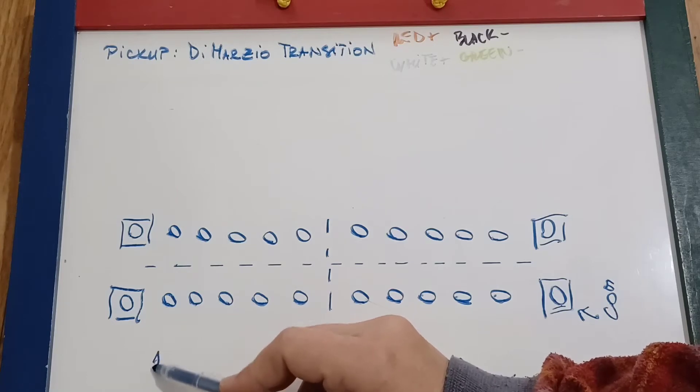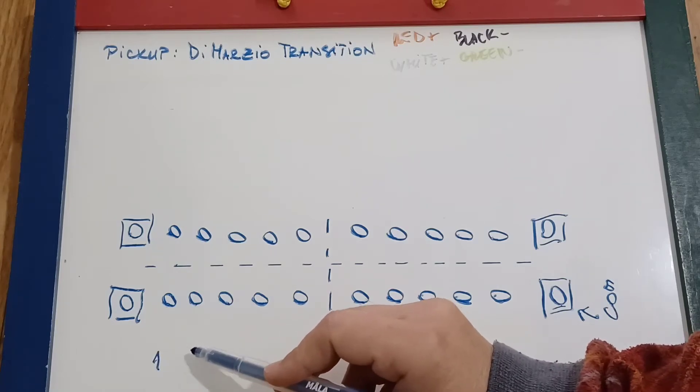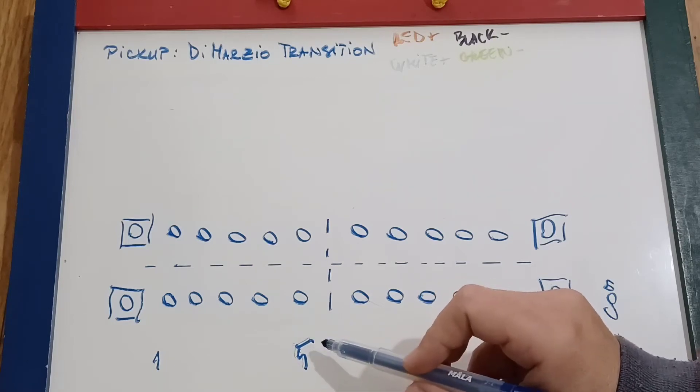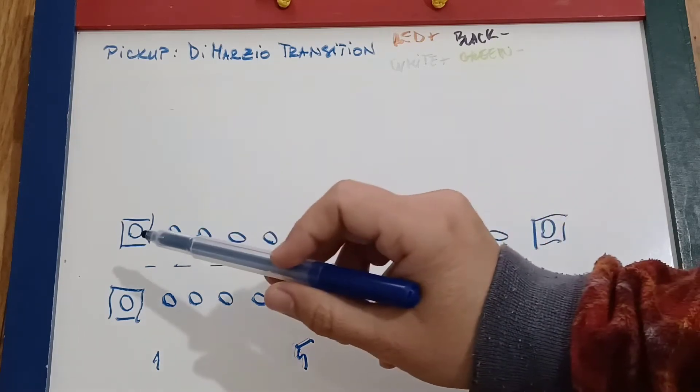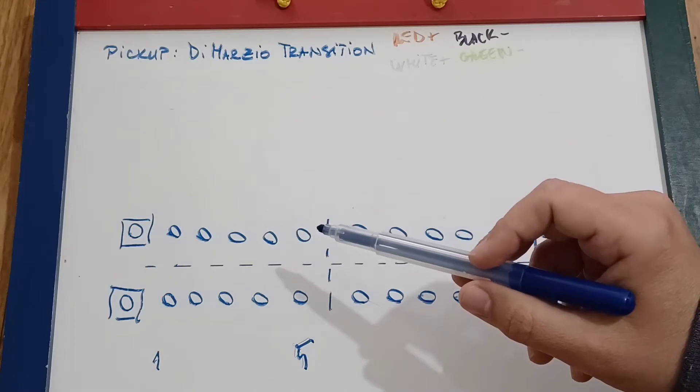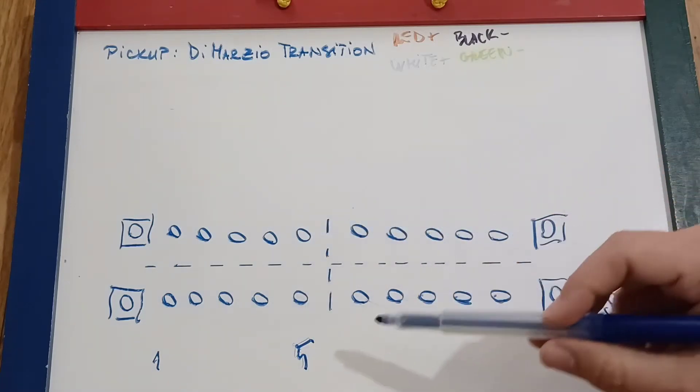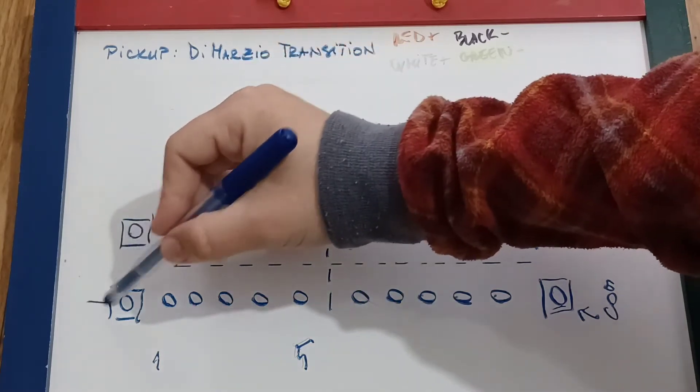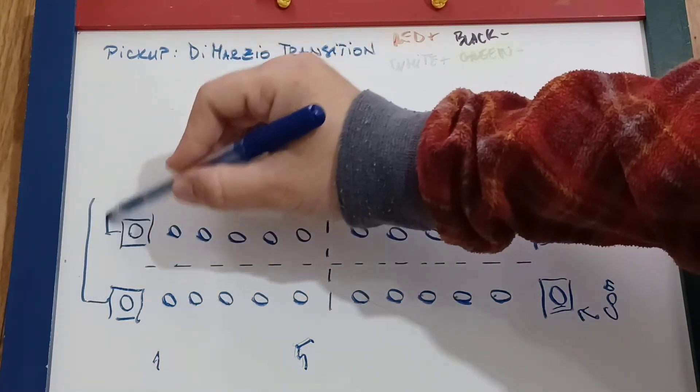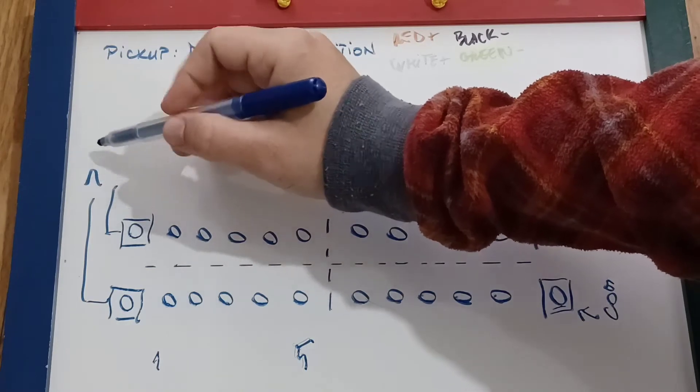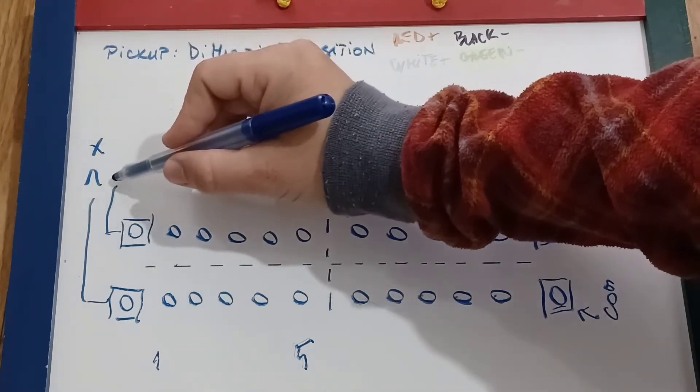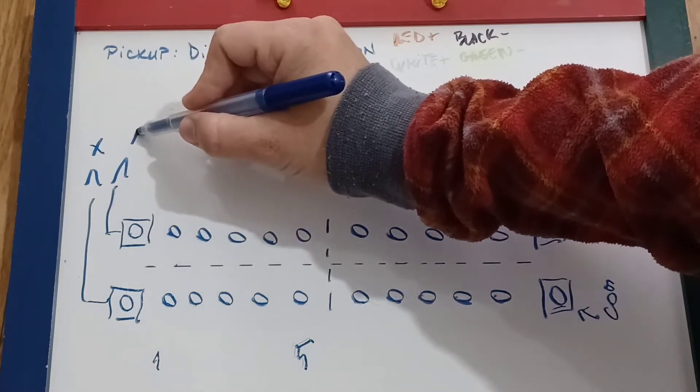On the left side, we have position one which will be the bridge and we move toward position five which will be the neck. And that repeats for this row and this row and for this row. These two commons will be our main outputs, one for the signal and one for the ground.